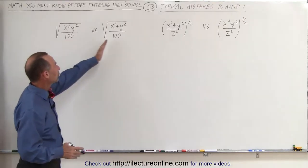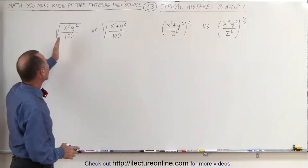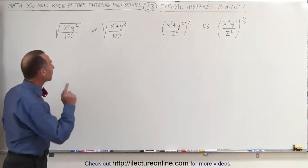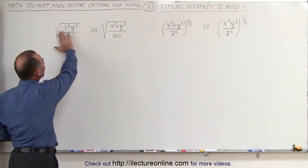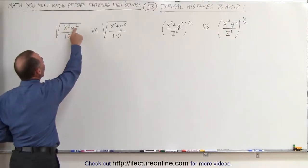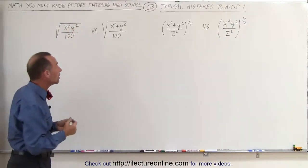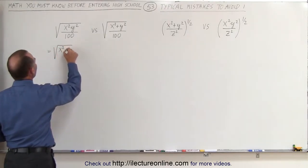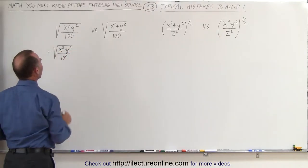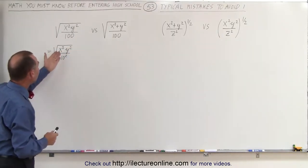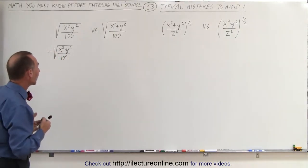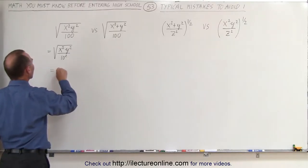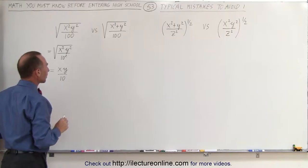For example, what is the difference between those two radicals? Can we take the square root of the left and can we take the square root of the right? On the left side, notice there's no plus or minus signs anywhere inside the radical — it's simply x squared times y squared divided by 100. Which means we can write this as the square root of x squared times y squared divided by 10 squared. Whenever you take the square root of anything squared, you can simply take it outside the radical sign. And since there's no plus or minuses, this can simply be written as x times y divided by 10.